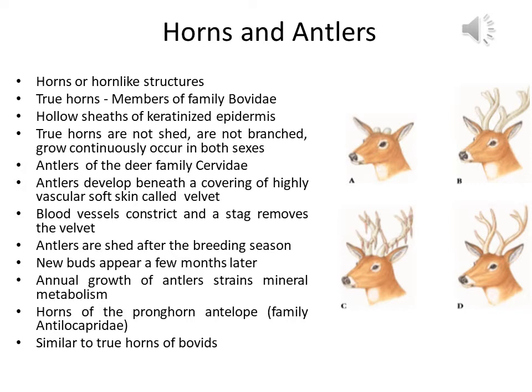Next are horns and antlers, another external structure. Several kinds of horns or horn-like structures are found in mammals. True horns, found in members of family Bovidae such as sheep and cattle, are hollow sheets of keratinized epidermis that embrace a core of bone arising from the skull. True horns are not shed, are not branched, grow continuously, and occur in both sexes.